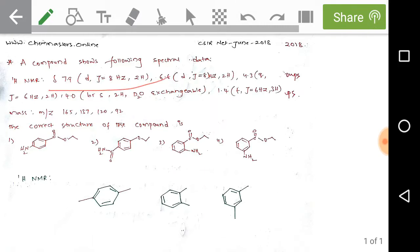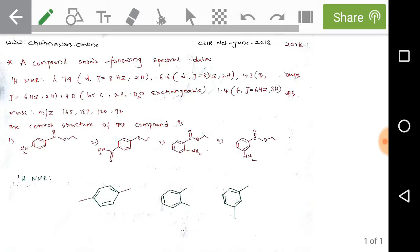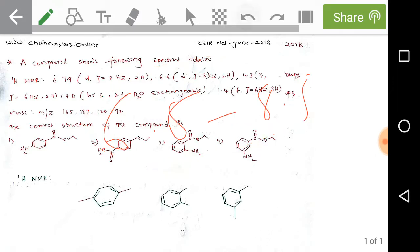We have delta 7.9 doublet J = 8 Hz, 2H and delta 6.6 doublet J = 8 Hz, 2H. By observing these two delta values, we can analyze that there is the presence of HNMR active nuclei on the benzene ring, since the range 6.5 to 8.5 is where HNMR active nuclei are present on the benzene ring. So we can conclude that there is a benzene ring present.